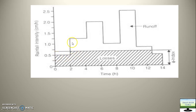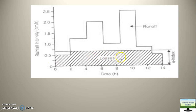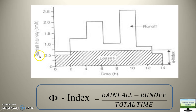If you remove these losses from the total rainfall, you will get the runoff. Here comes our concept of phi index. Phi index is nothing but the losses divided by total time. How can you calculate these losses? Total area of the graph — total amount of rainfall — minus runoff equals losses. So, phi index can be defined as rainfall minus runoff divided by total time.